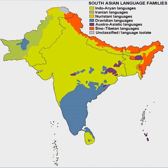A revival of Tamil literature took place from the late 19th century. Nationalist poets began to utilize the power of poetry in influencing the masses. With the growth of literacy, Tamil prose began to blossom and mature, and short stories and novels began to appear. The popularity of Tamil cinema has also provided opportunities for modern Tamil poets to emerge.